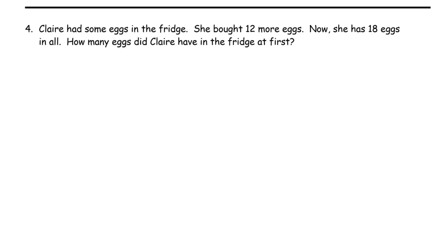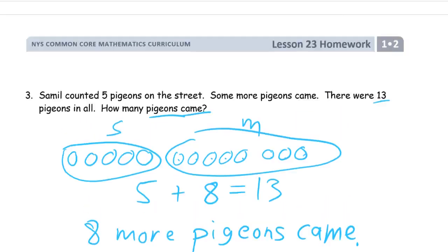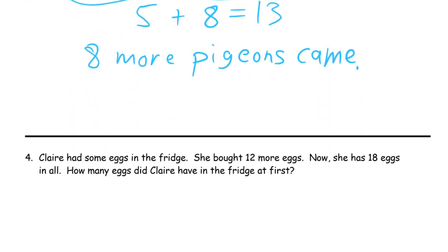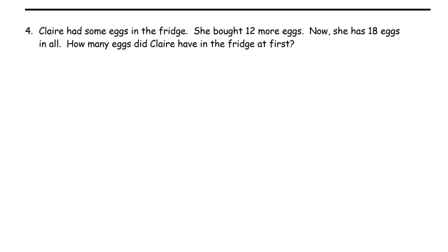Claire had some eggs in the fridge. She bought 12 more eggs. Now she has 18 eggs in all. How many eggs did Claire have in the fridge at first? Now just for variety — I've been doing all addition number sentences for the first three. You can do these with subtraction too. If you know the whole and you have a missing part, you can use subtraction to find out too. So we know the 12 more she bought and we know the 18 eggs in all.